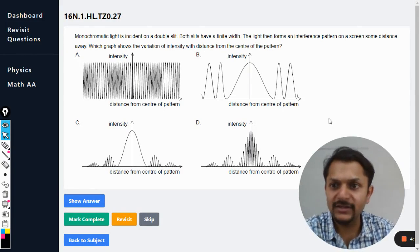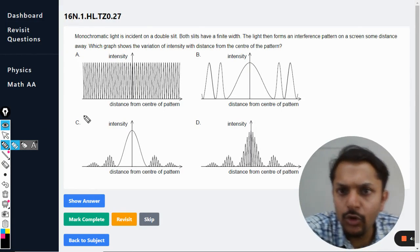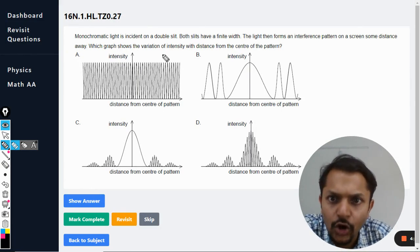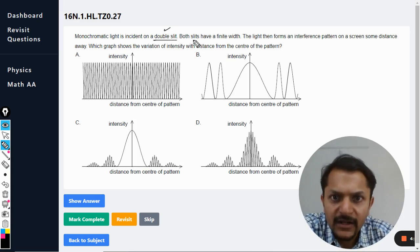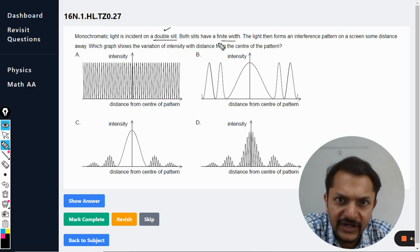Okay dear students, let us see what is there in this question. Monochromatic light is incident on a double slit. Double slit means that interference will be taking place.